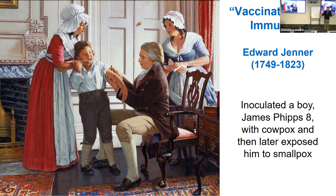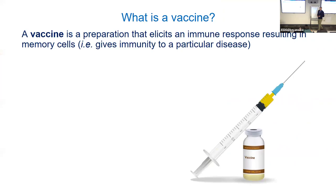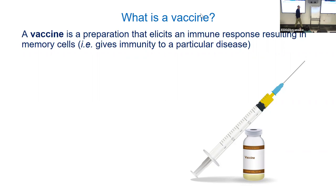We sometimes call it vaccine, sometimes immunization — they mean the same thing. A vaccine is technically a preparation that gives you an immune response, and hopefully that immune response gives you immunity against the real actual pathogen or disease when it comes. Someone mentioned that mumps can give lifelong immunity too — yes, it kind of just depends on the actual vaccine. There's a lot we don't understand.